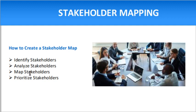The third step is to map the stakeholders with respect to their interest and influence. The fourth step is to prioritize them — stakeholders with high interest and high influence are the most important, while those with less interest and less influence have a lower priority. So the four main steps are: identify stakeholders, analyze them with respect to power, influence, expectations, and interest, map them by category, and then prioritize them.